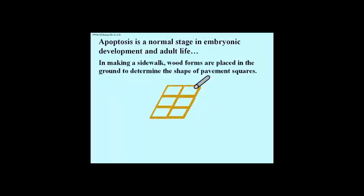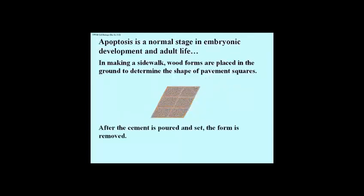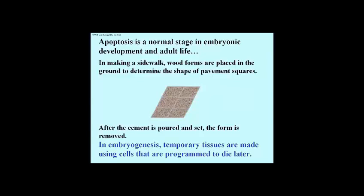Here's an analogy that might be useful. If you've ever seen workers pouring a cement sidewalk, you may have noticed that they first lay a set of wooden forms out in the pattern of the eventual cement squares of the sidewalk. Next, cement is poured into each of the forms and allowed to set, and after the cement is hardened, the forms are removed and the sidewalk is finished. Think of the wood forms as embryonic cells that were created to guide the formation and location of subsequent cells in the embryo. Once their job is done, however, these cells must undergo a programmed cell death — in other words, apoptosis.